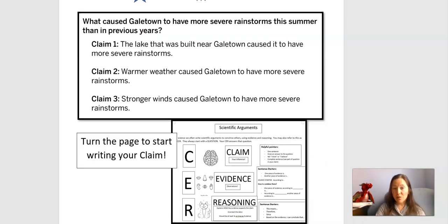I'm just going to do a quick review about our CER. So the claim, remember, is your inference. What are you thinking? Using your brain. Miss Tiberio is thinking that a good claim might be warmer weather caused Galetown to have more severe rainstorms.